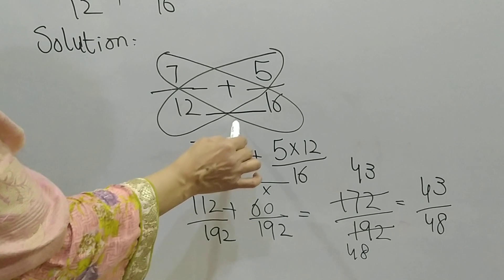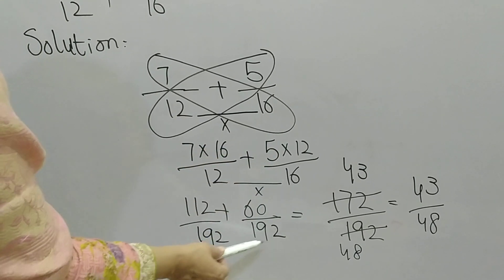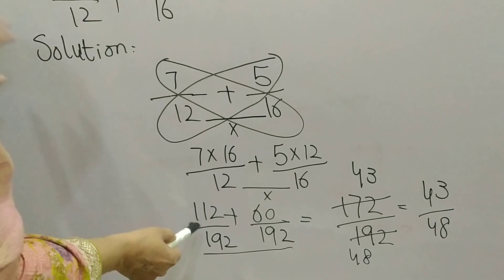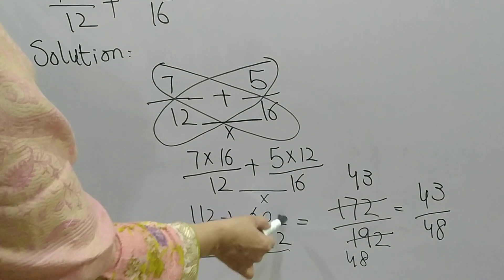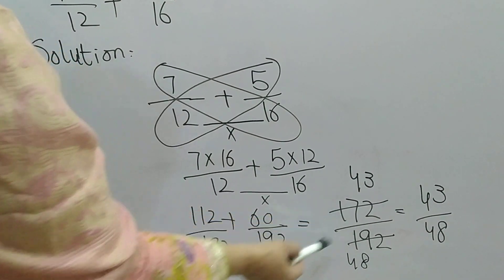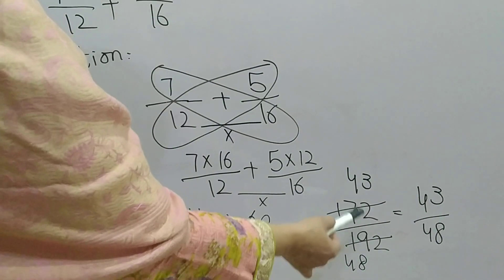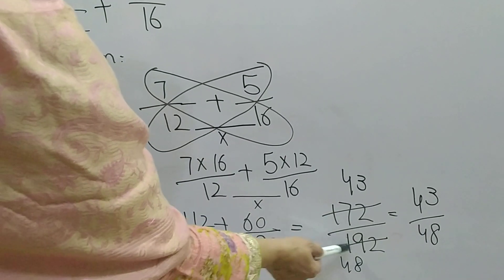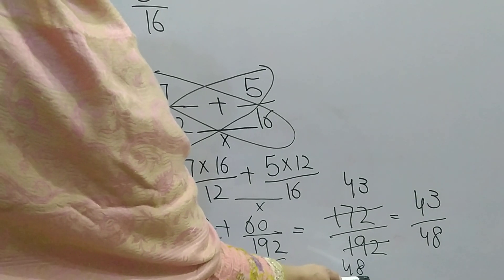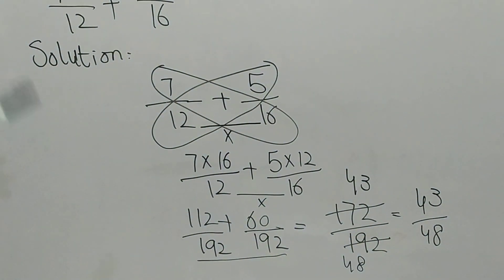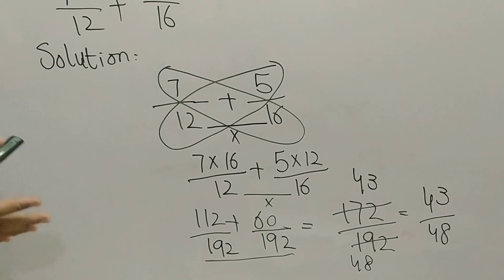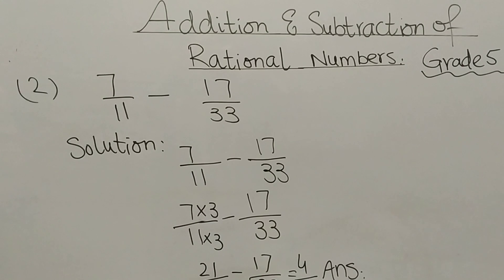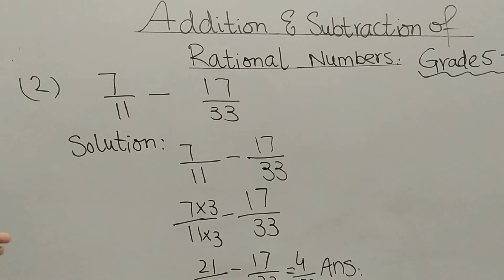The denominator numbers are multiplied together to make the common denominator. Multiplying 16 by 12 gives 192. We add 112 and 60 to get 172 in the numerator. Then 192 divided by 4 gives 48, and 172 divided by 4 gives 43, so our answer is 43 by 48 — the same answer as the previous method.